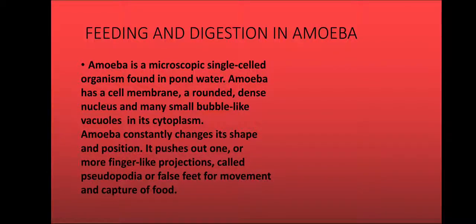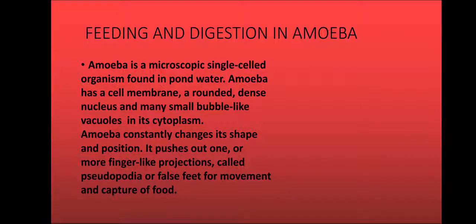Amoeba has a cell membrane around its dense nucleus and many small bulb-like vacuoles in its cytoplasm. These terms — cell membrane, cytoplasm — were discussed in chapter one on nutrition in plants. Since amoeba is made up of a single cell, it does not have organs like us. It does not have hands to take food into its mouth, and it does not even have a mouth.